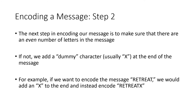If the message doesn't have an even number of letters, we add an extra letter at the end — usually X, which acts as a dummy character. When we decode the message and see an X at the end, we know it was added just to make the count even. For example, if we wanted to encode the word 'retreat,' that has seven letters, which is odd, so we add an X to the end, making it 'retreat X.'